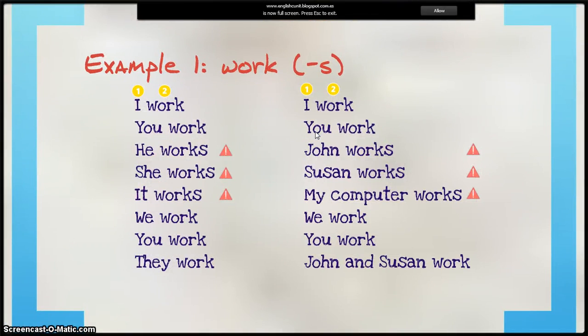Example 1. Here we have the subject and here we have the verb. In this case, it's John and he. Susan and she. It, or my computer, because my computer is not he or she. It's an object. Notice the little s here.